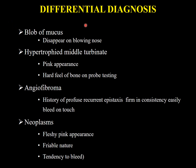Differential diagnosis: it may be a simple blob of mucus, which disappears on blowing the nose. It may be a hypertrophic middle turbinate — the turbinate has a pink appearance and hard feel of bone on probe testing, whereas the polyp is soft. Angiofibroma is an important differential as it also presents in young adults, mainly males — but angiofibroma has a history of recurrent epistaxis, a firm consistency, and it bleeds easily on touch. A neoplasm will have a fleshy pink appearance, friable nature, and tendency to bleed.